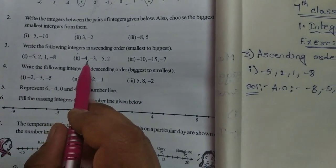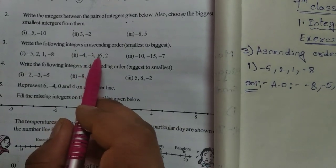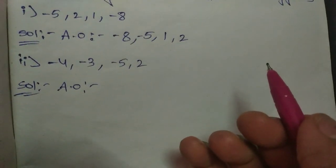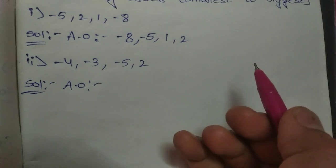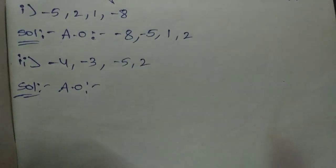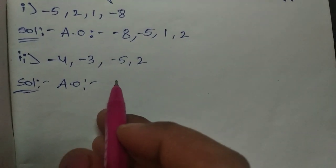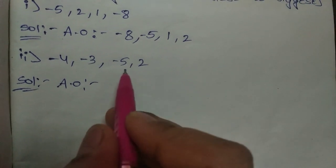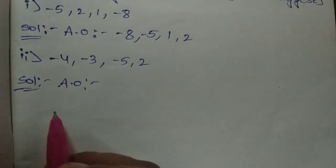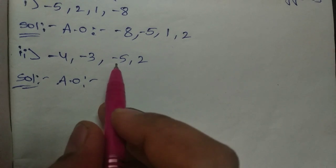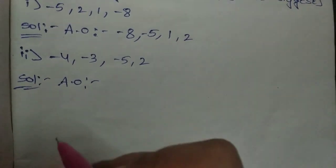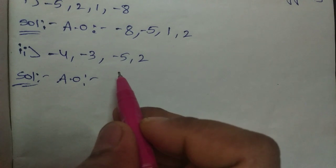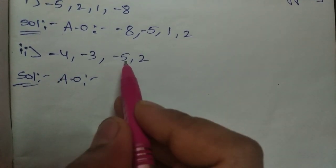Next, second question: minus four, minus three, minus three, minus five, comma two. Ascending order. Now you pick — which one is the smallest? Only look at the negative integers. The one having the biggest digit with a negative sign is always the smallest integer.